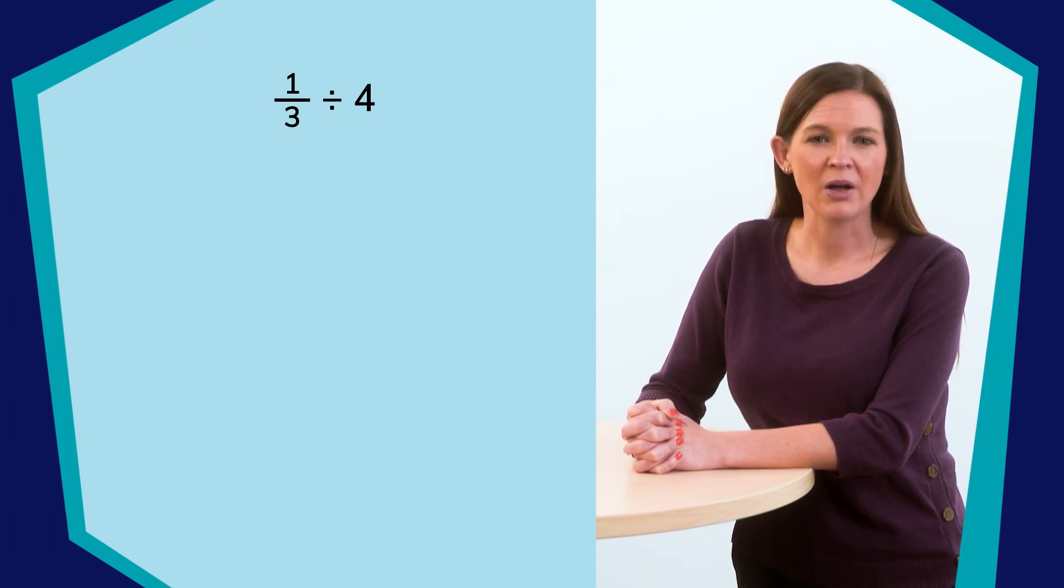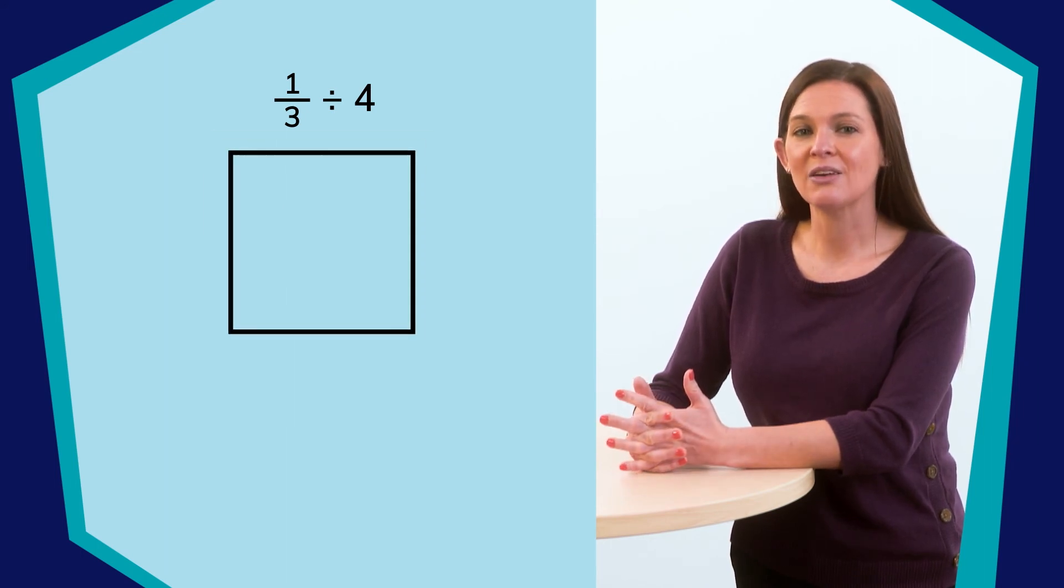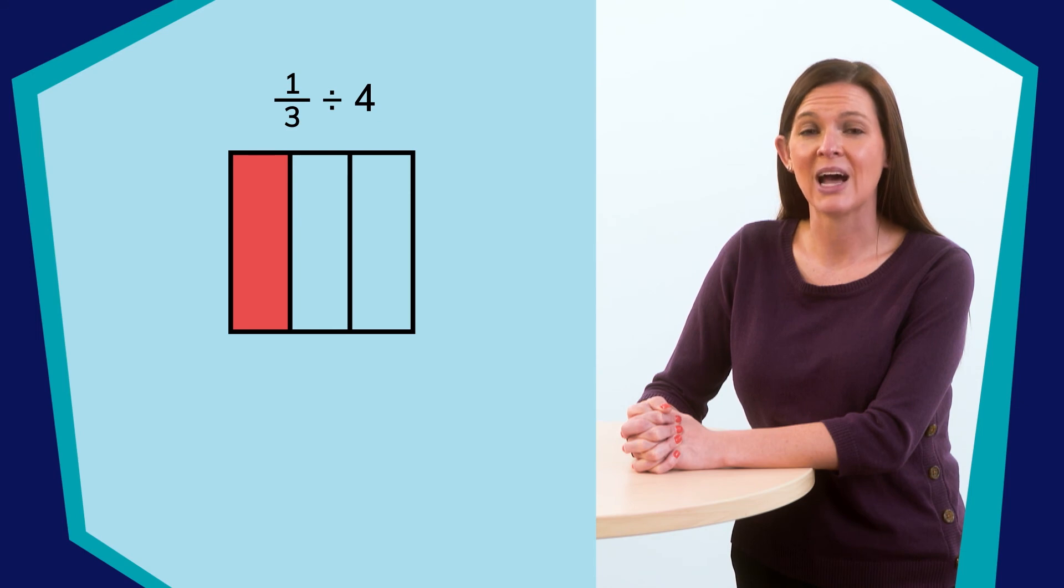Now, how can I draw a model of this? Nice thinking. We can do it exactly as before, where we start with the value that is being divided, one-third. We can represent the gallon of milk with this square and then divide it into three equal parts, shading in one of them as I had one-third of a gallon of milk. Now, we need to divide this one-third into four equal groups. How might I do that?